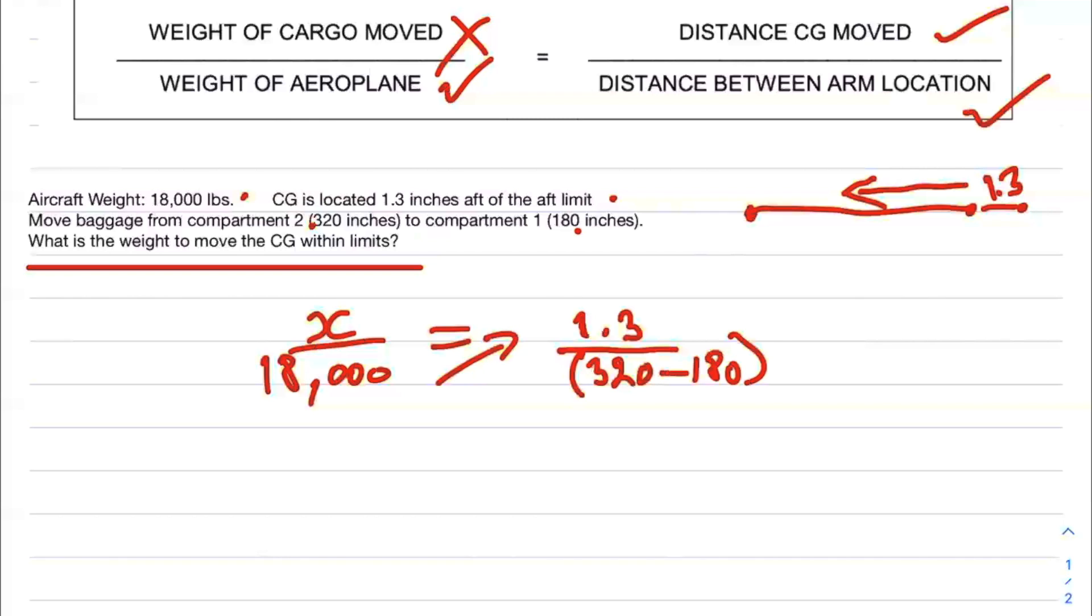Now, if you cross multiply, we get X equals 18,000 times 1.3 divided by 140, which equals 23,400 divided by 140.